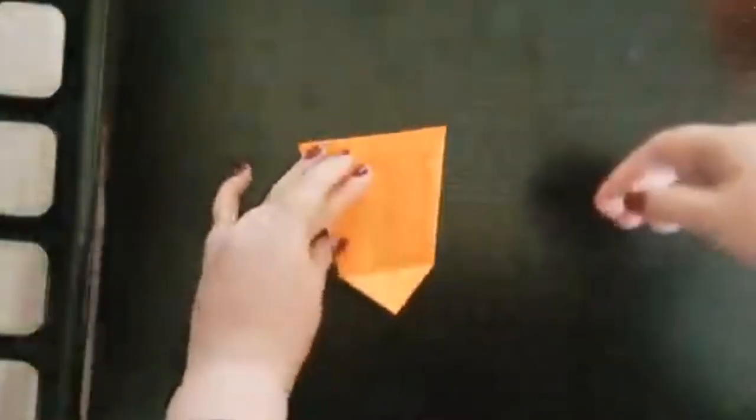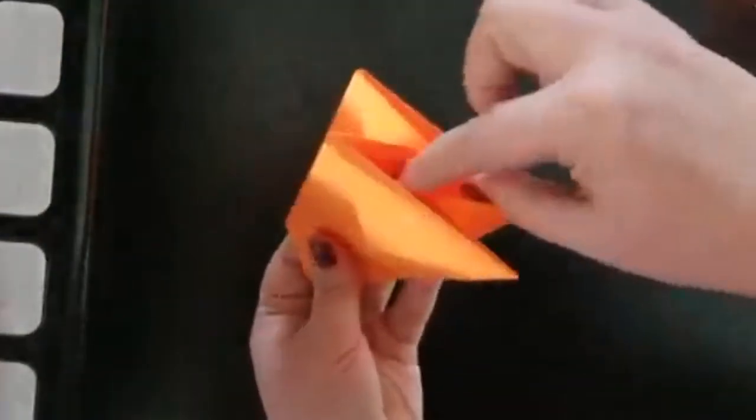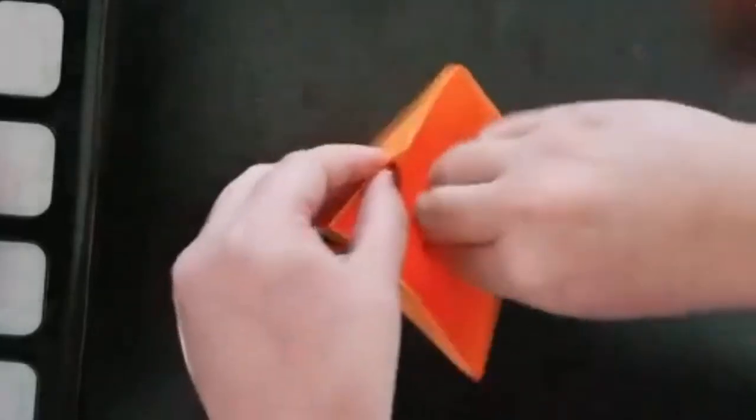Congratulations! You've completed all of the folding steps for making an origami seed starter. All that's left to do now is to open up your planter.